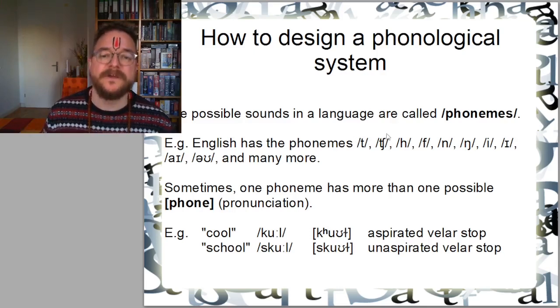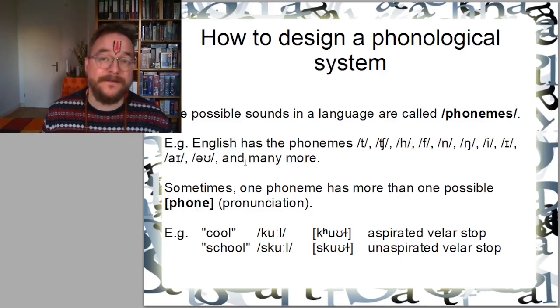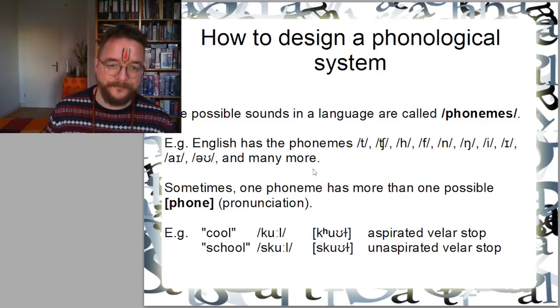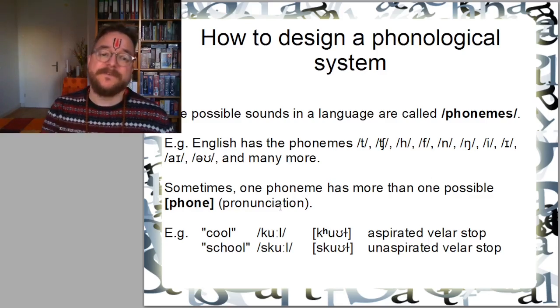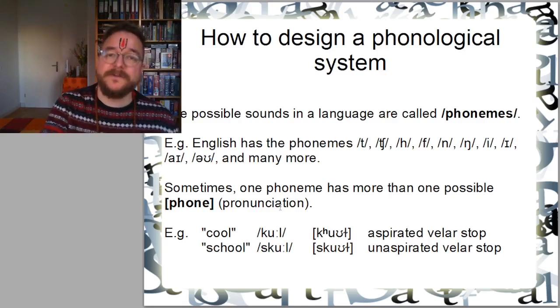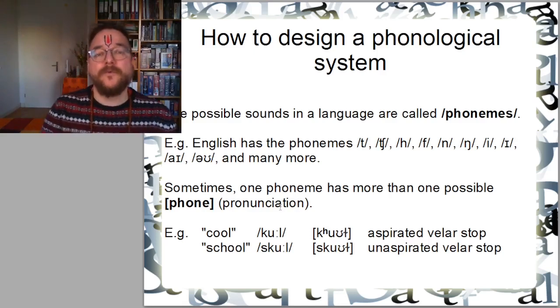I will read these aloud. There's a T, CH, H, F, N, NG, E, I, O, and many more phonemes. Sometimes one phoneme has more than one possible phone. So a phoneme in a language can have different pronunciations, different phones, depending on where in a syllable or in a word it appears.